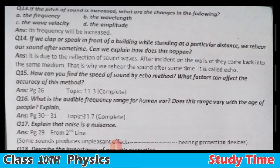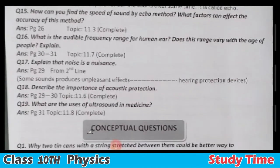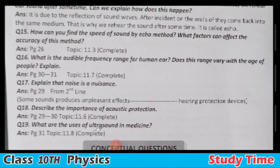Question number sixteen: What is the audible frequency range for humans? Does this range vary with age? Refer to topic 11.7, pages 30 and 31. Question number seventeen: Explain that noise is not necessarily a bad thing. Refer to page 29, second line — 'some sounds produce unpleasant effects.' This is a small paragraph answer.